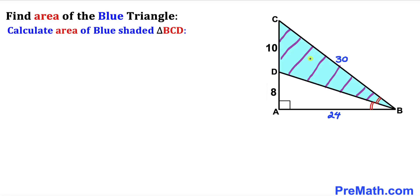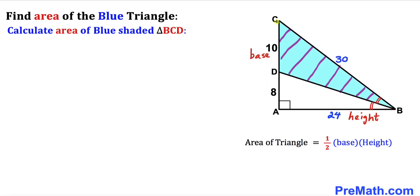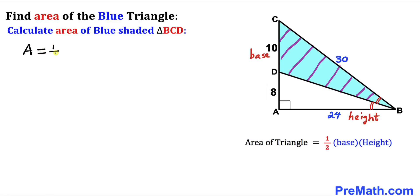Now for our final step, let's calculate the area of the blue shaded triangle BCD. Recalling the area of a triangle formula: area equals one half times base times height. For this blue shaded triangle, CD is our base and AB is our height. So the area equals one half times base 10 times height 24, which simplifies to 120 square units.